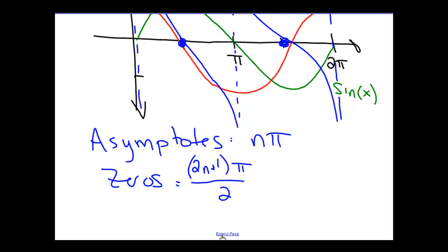And again, just as with tangent, cotangent has a different period. The period of this function is π.